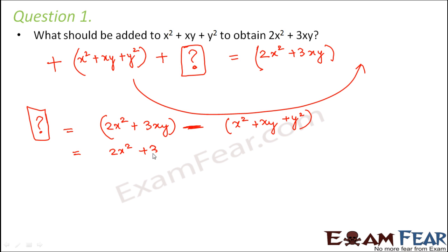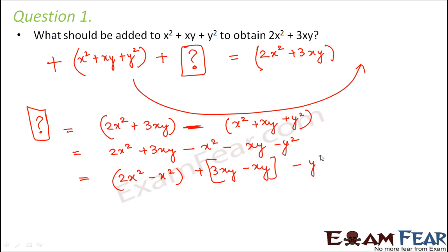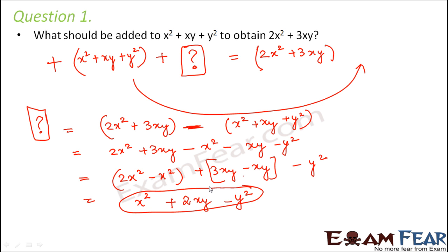So we need to find the difference between these two expressions. Rearranging: 2x squared plus 3xy minus x squared minus xy minus y squared. Collecting like terms: 2x squared minus x squared gives x squared; 3xy minus xy gives 2xy; and minus y squared remains. So x squared plus 2xy minus y squared is the answer.